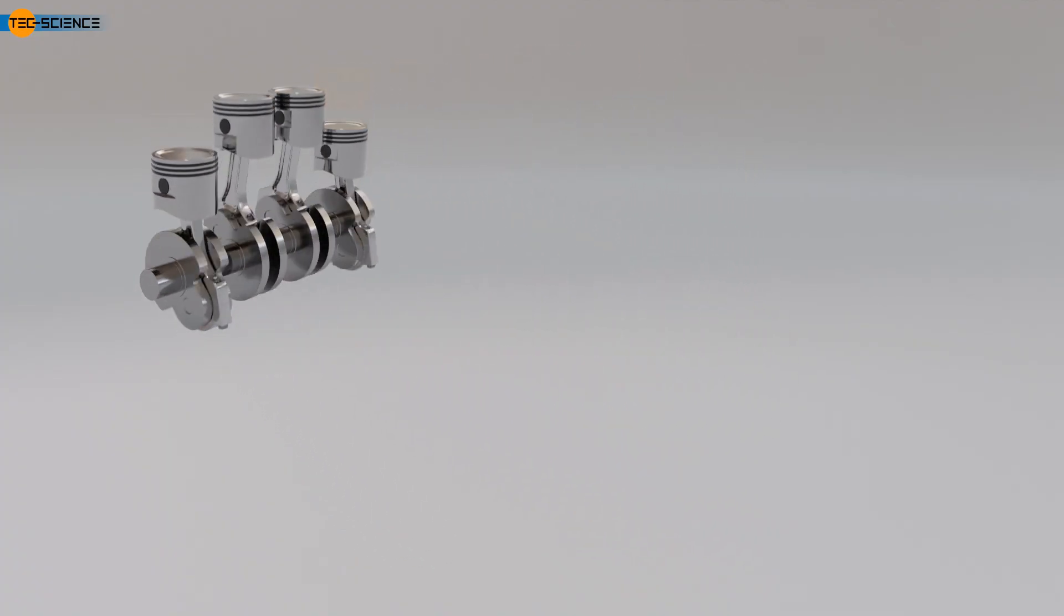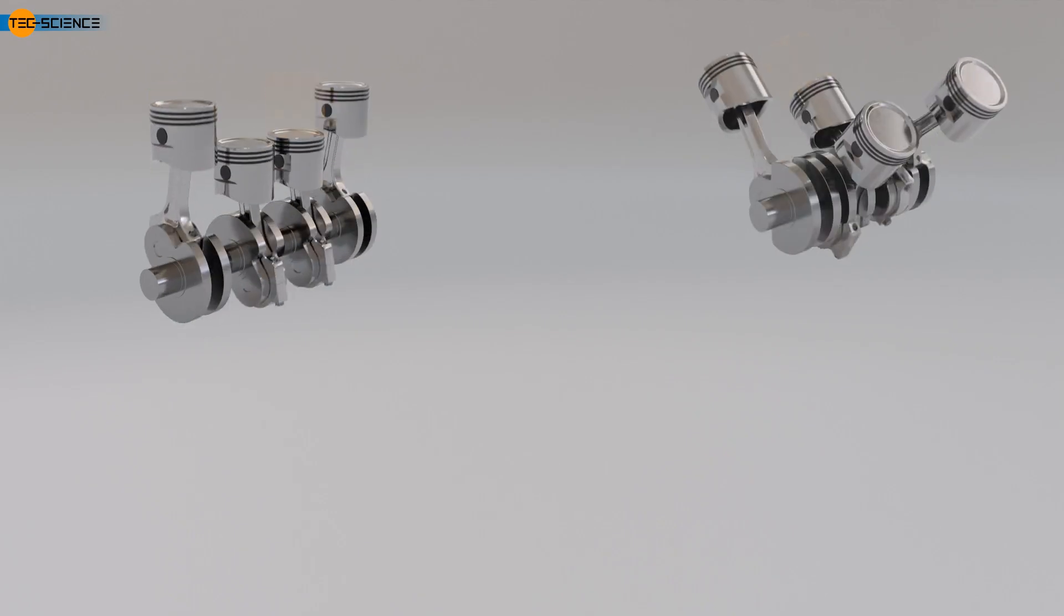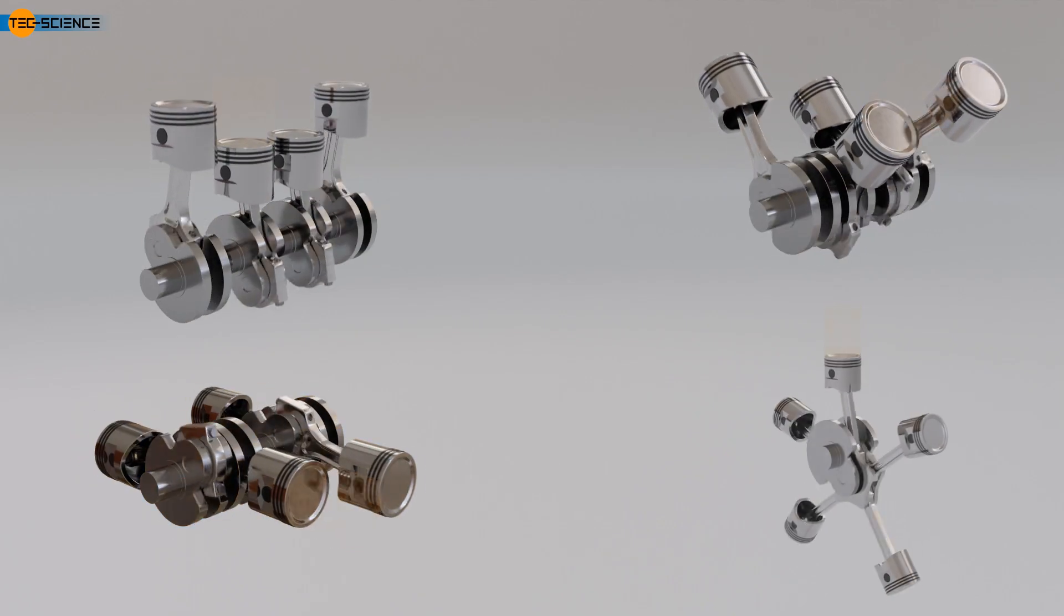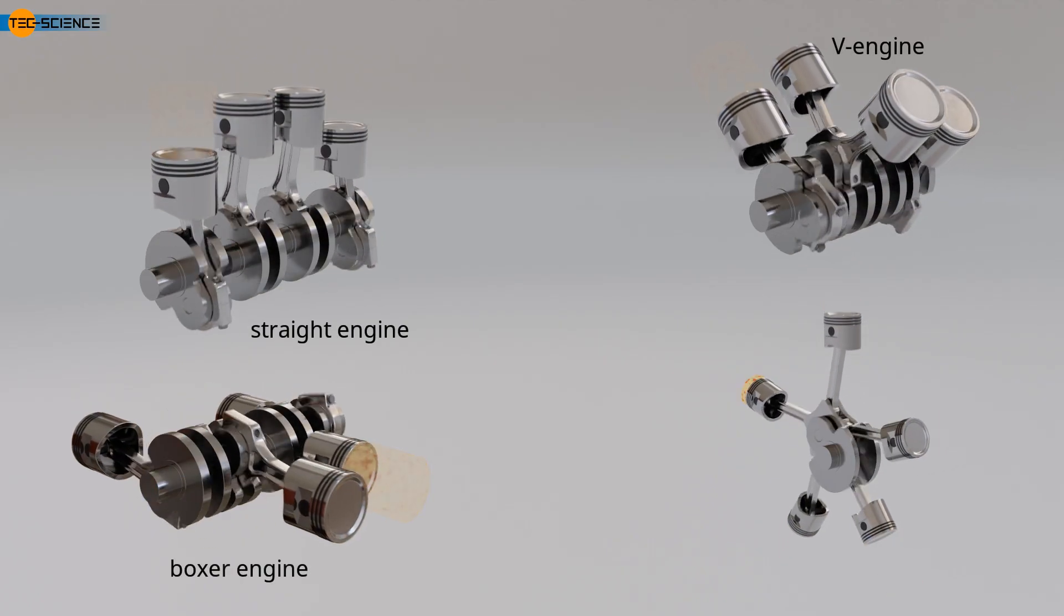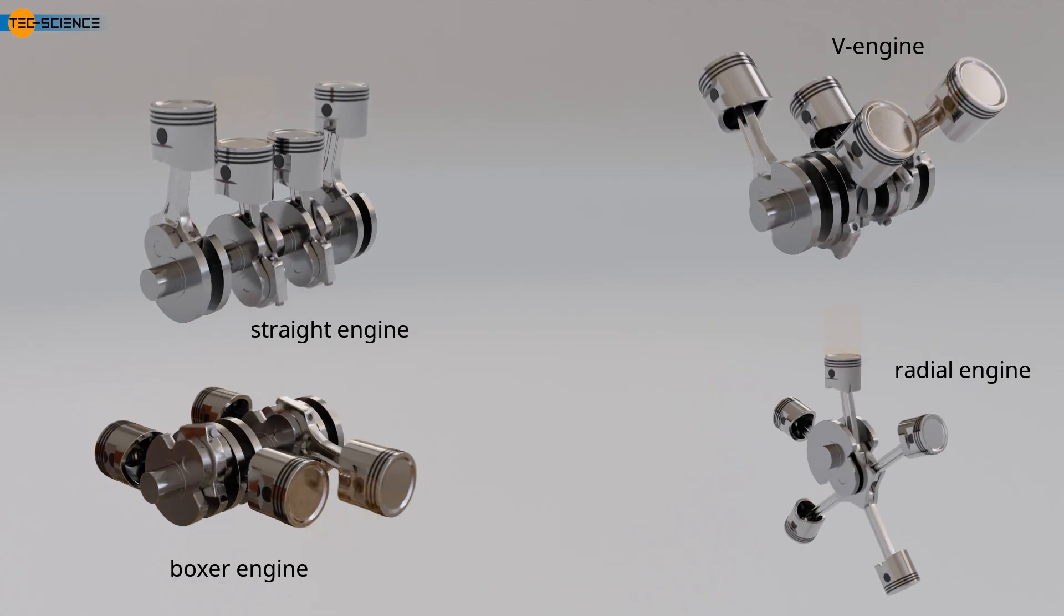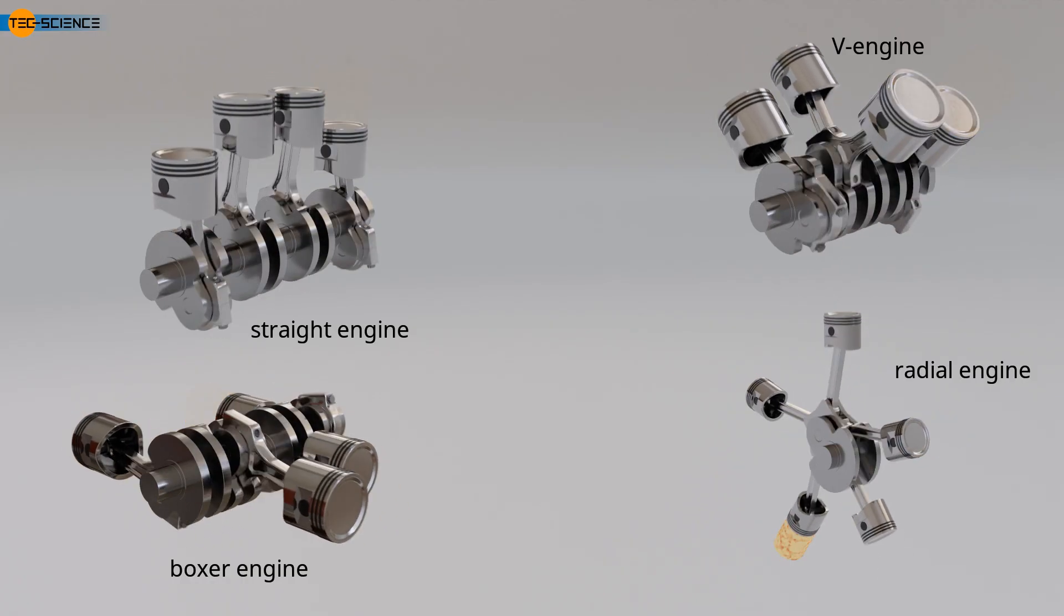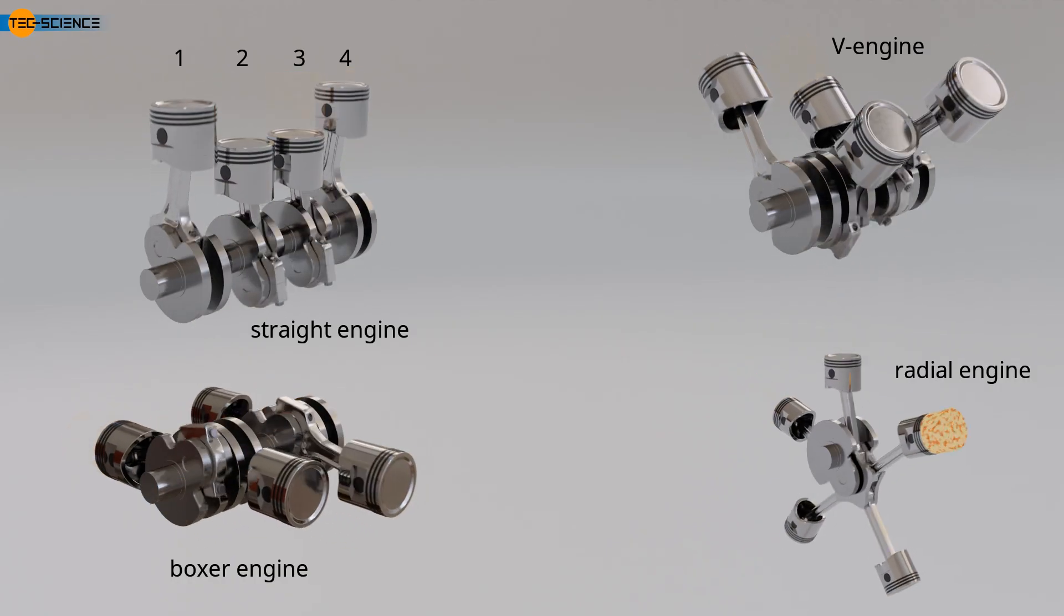Depending on how the cylinders are arranged, such as in a straight line, in a V-shape, horizontally, or radially, the engine is referred to as a straight engine, or inline engine, V-engine, boxer engine, or radial engine, also called star engine. In 4-cylinder engines, each half-turn of the crankshaft is associated with a power stroke from one of the 4 cylinders. This increases the smoothness of operation. If you number the cylinders of a 4-cylinder inline engine from 1 to 4, the ignition occurs either in the sequence 1, 3, 4, 2, or in the ignition order 1, 2, 4, 3.